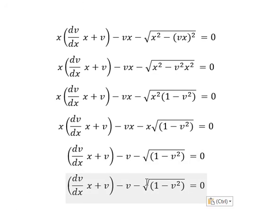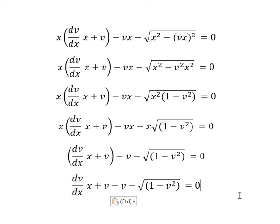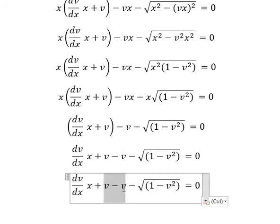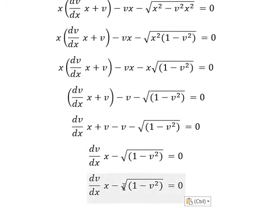Next, we divide both sides by x. Then we open the parenthesis. v minus v cancels out.